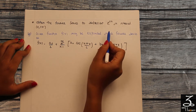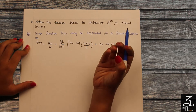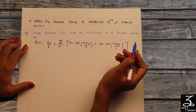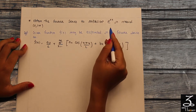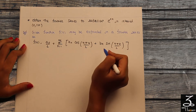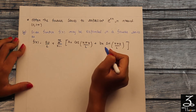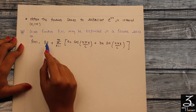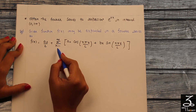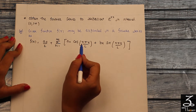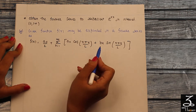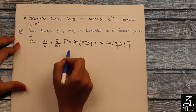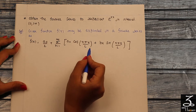Exponential function means terms with respect to e raised to 2x, e raised to minus x, e raised to ax and so on. We want to find this exponential function in terms of sine and cosine series. For that, the most important thing required is the standard Fourier series expansion formula: f(x) = a0/2 + summation n=1 to infinite of an·cos(nπx/l) + bn·sin(nπx/l). The required terms are a0, an, bn, and l.